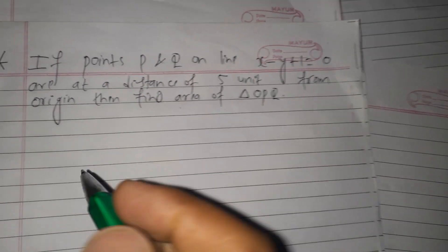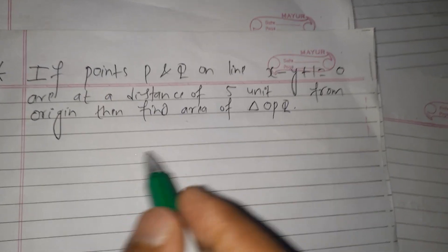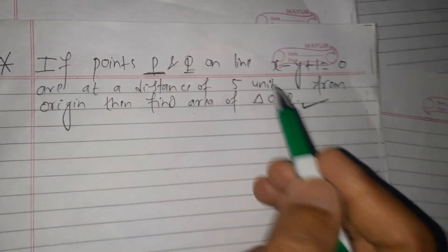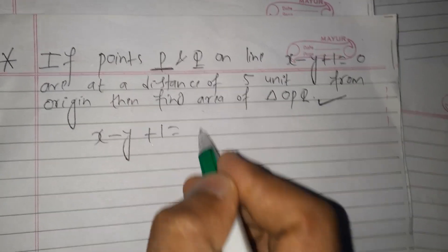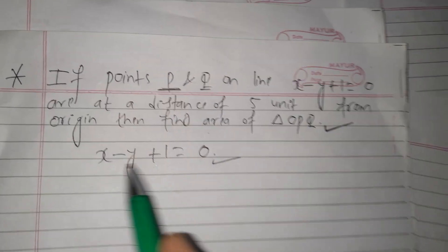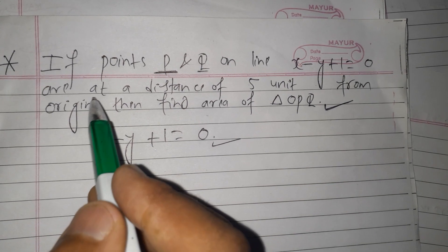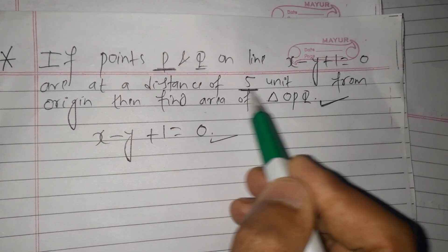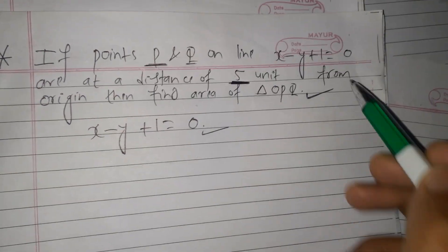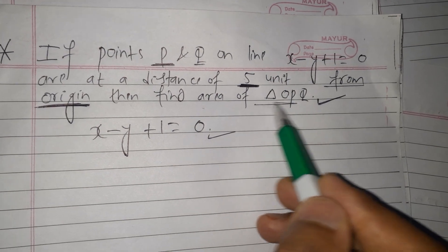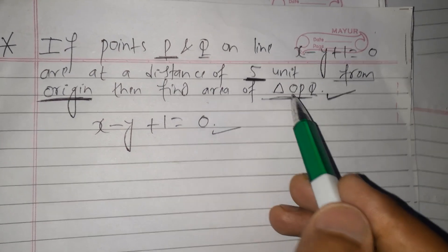Here is a problem posted on Facebook related to coordinate geometry or analytical geometry. The question is: if two points P and Q lie on the line X minus Y plus 1 is equal to zero, and both points P and Q are at a distance of 5 units from the origin, then find the area of triangle OPQ, where O is the origin.